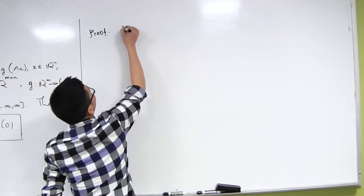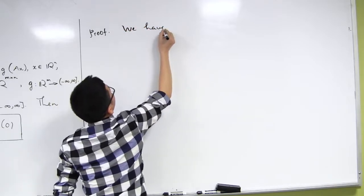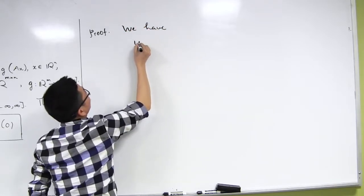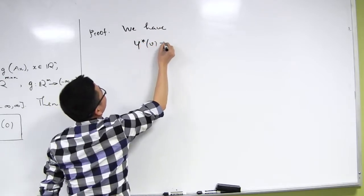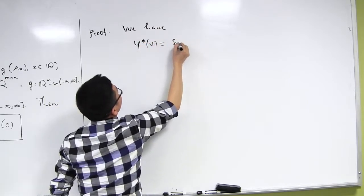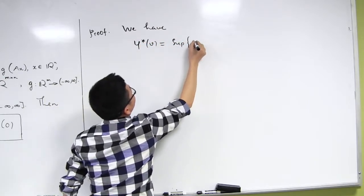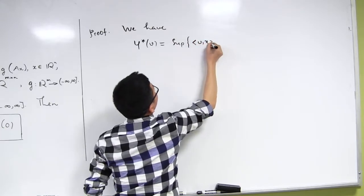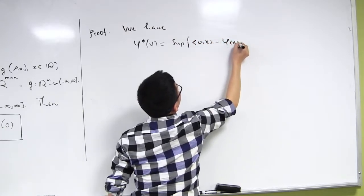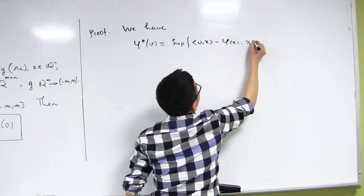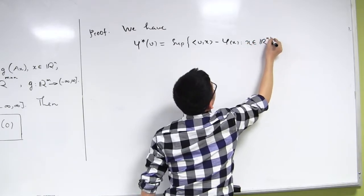So we have the following. The Fenchel conjugate of φ at v is the supremum of the inner product of v and x minus φ of x, where x runs in R^n.